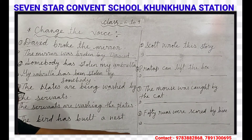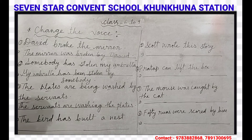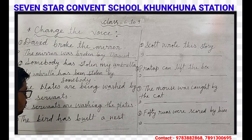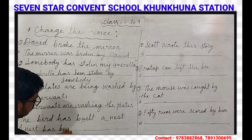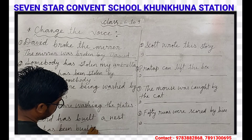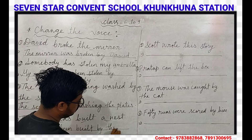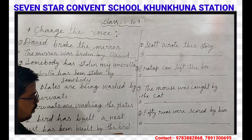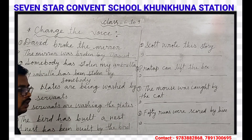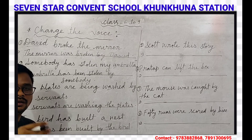Our next question is: The bird has built a nest. Here the bird is the subject and nest is the object; 'built' is the main verb and 'has' is the helping verb. It is in present perfect tense. A nest will take the place of the subject. A nest has been built by the bird. In present perfect tense, both active and passive voice use the verb in third form.